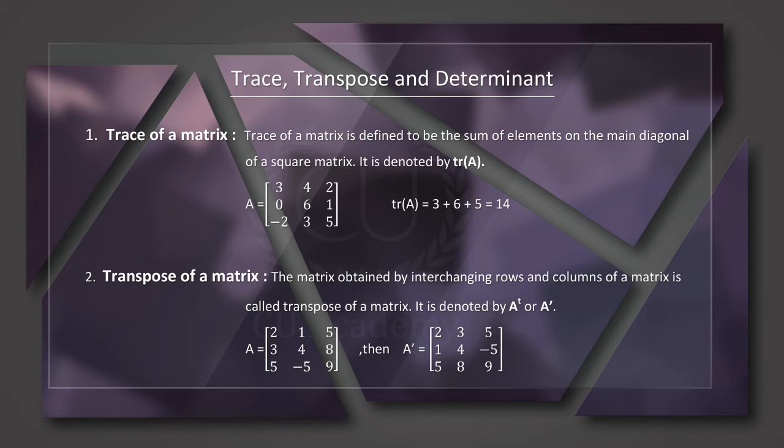In this video, we will talk about Trace. Trace of a matrix is defined to be the sum of elements on the main diagonal of a square matrix. In a square matrix, the sum of the diagonal elements is called the trace of a matrix.